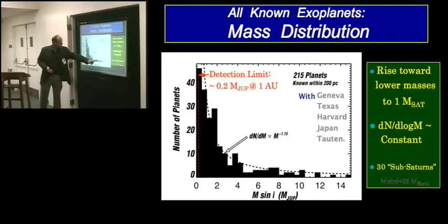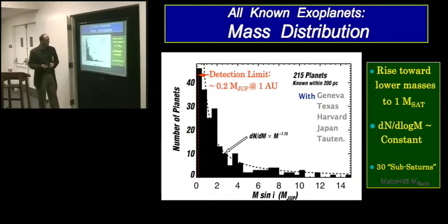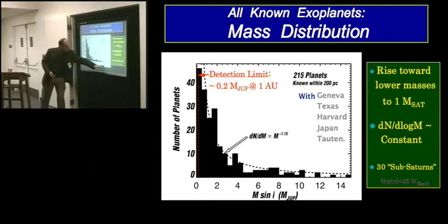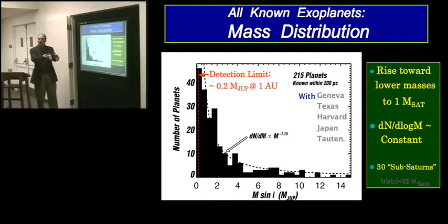The distribution of masses of extrasolar planets is shown here. Probably all of you know this result, but here's the most recent one, the 215 best quality planets are shown here. The rise toward lower and lower masses with a nearly power law dependence. What's exciting is the notion that even though this is a Jupiter scale here from zero to 15 Jupiter masses, clearly below a Saturn mass, the mass distribution is still rising. There's every reason to think that nature makes more Neptunes than Saturns. And as I would suggest in a few moments, I imagine nature makes even more rocky planets than the Neptunes and gas giants. So that's an exciting result at this stage.